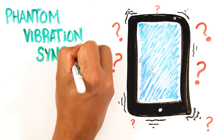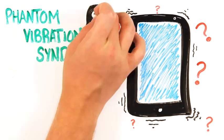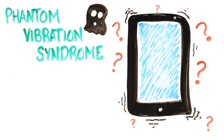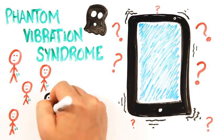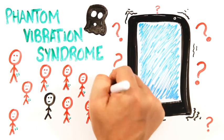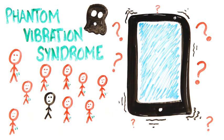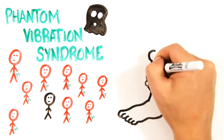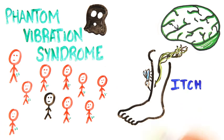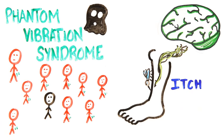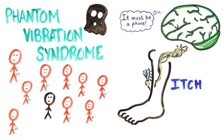Phantom vibration syndrome is a relatively new psychological phenomenon where you think you felt your phone go off, but it didn't. In one study, 89% of test subjects said they experience this at least once every two weeks. It would seem that our brains now perceive an itch as an actual vibration from our phone. As crazy as it seems, technology has begun to rewire our nervous system, and our brains are being triggered in a way they never have before in history.